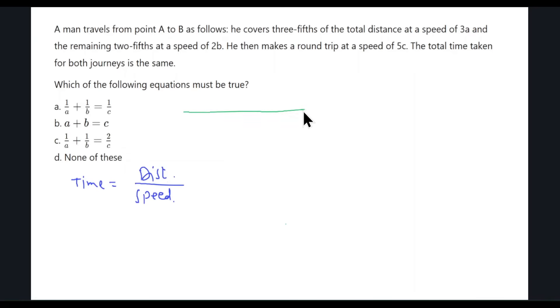Let's say the A to B distance is actually X, and this is where I have a three-fifths distance, so three-fifths of X, and this is two-fifths of X. This is traveled with a speed of 3A, and this is traveled with a speed of 2B. Let's say the time here is T1, and the time here is T2. So T1 is distance over speed: 3X over 5 over speed 3A. If you use keep change flip, I end up with X over 5A, that's T1.